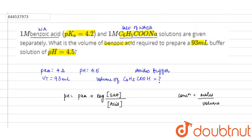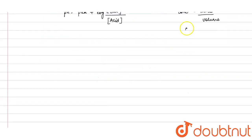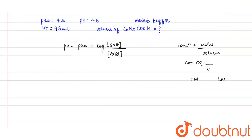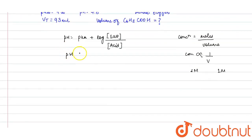The concentrations are both 1 molar, so they are the same. Since concentration is inversely proportional to volume, and moles are the same, the ratio of concentrations can be replaced by the ratio of volumes. So pH = pKa + log(V₂/V₁).